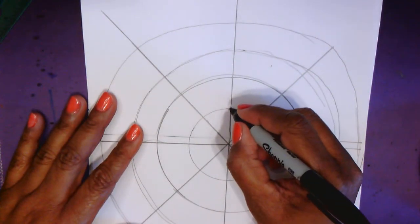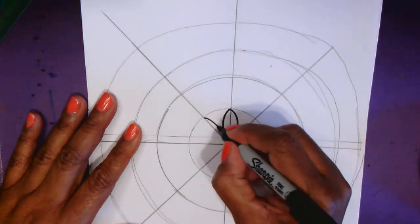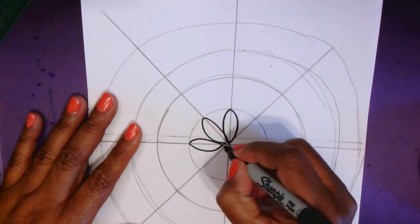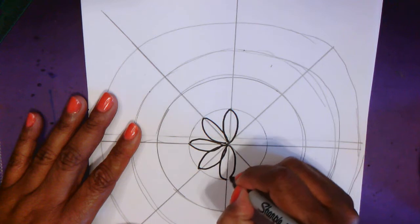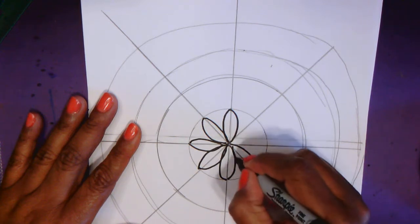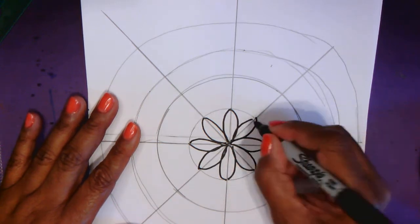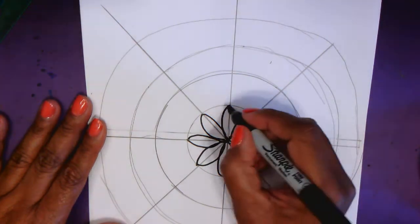So for this line, I'm just going to add a half circle on each side. So a half circle on each side. And this will turn into a flower. Half circle on each side. There we go. So our first part of the mandala is finished.